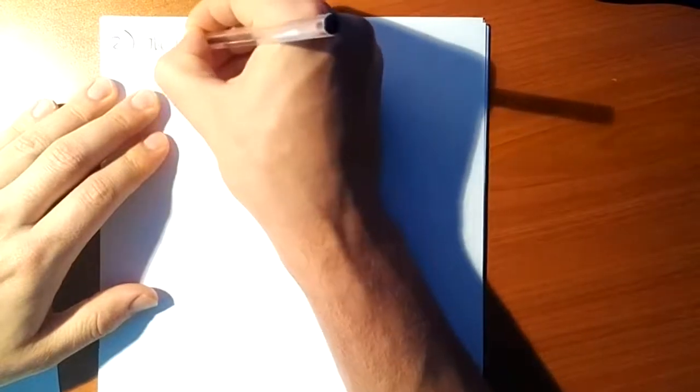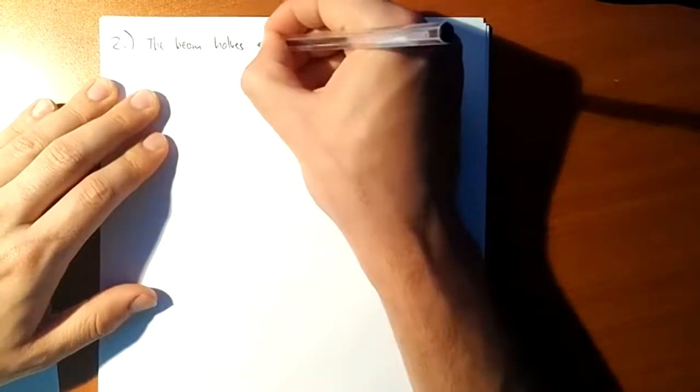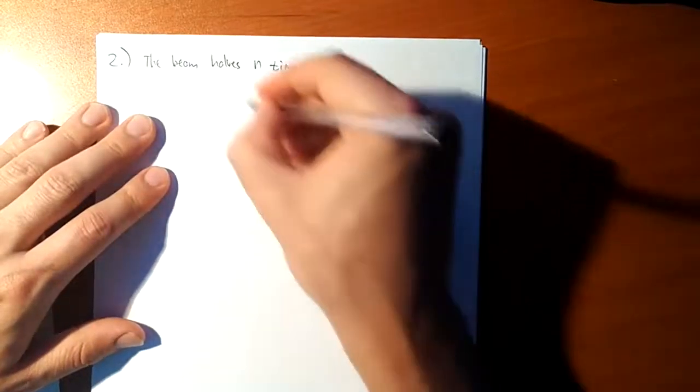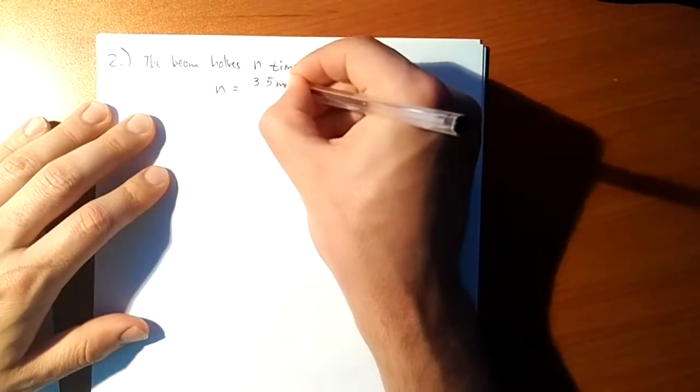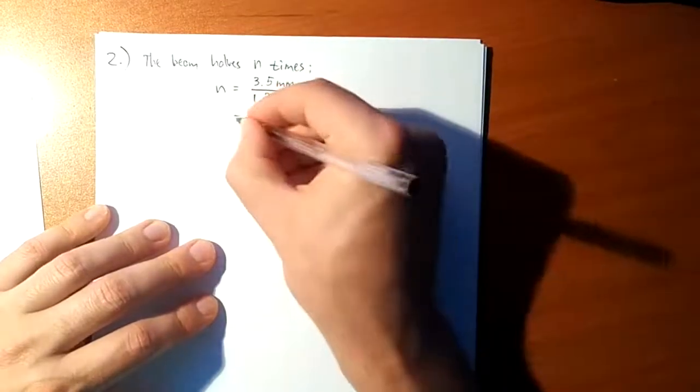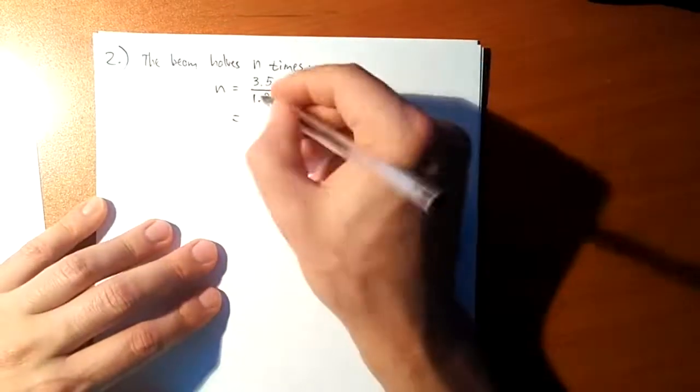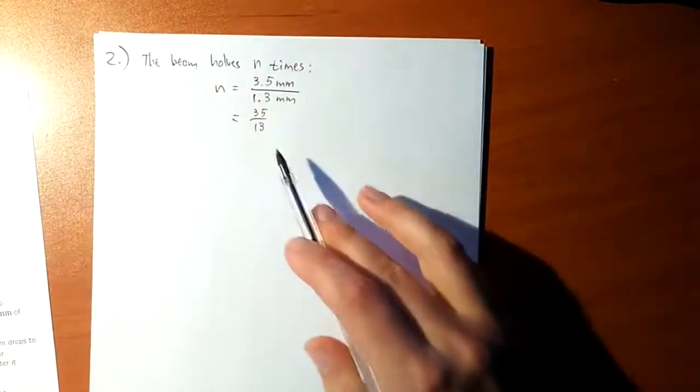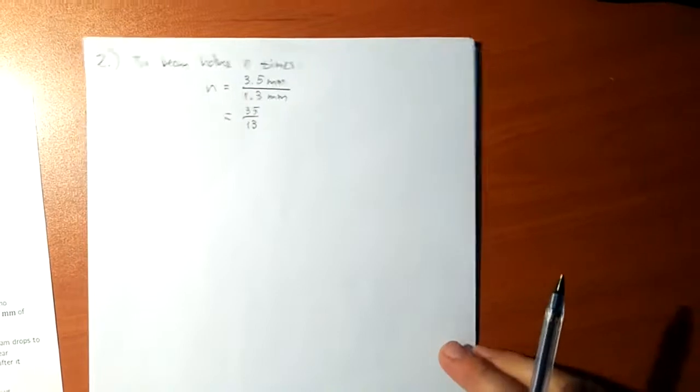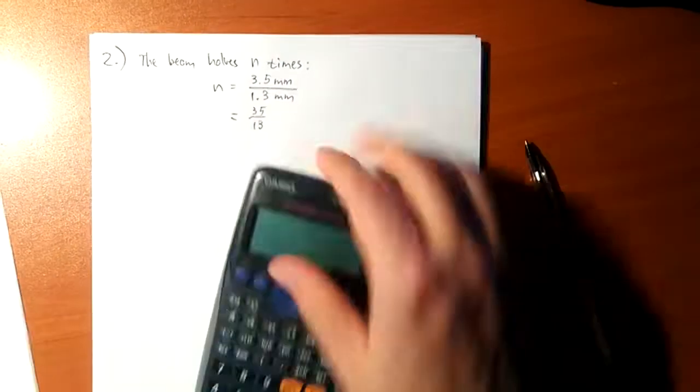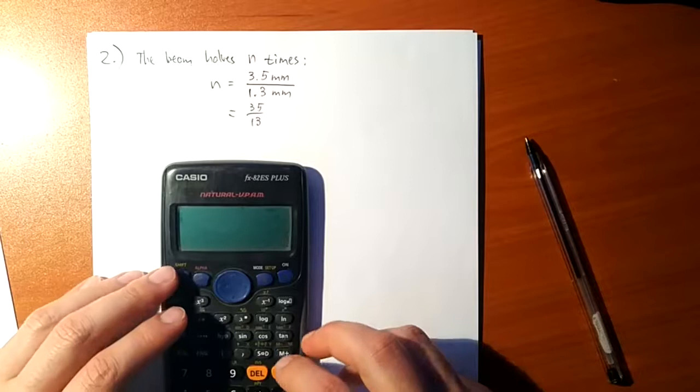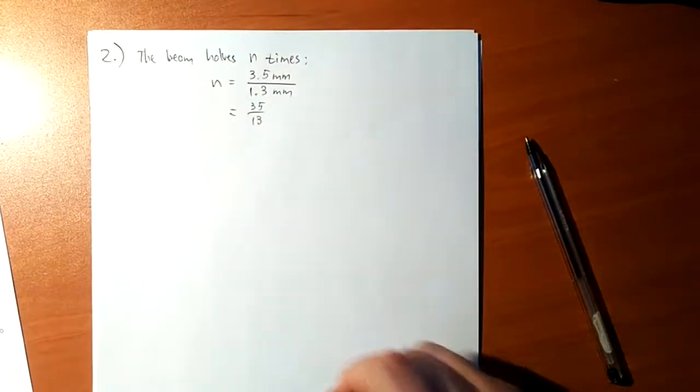So the beam halves N times, where N is now equal to thickness of material, 3.5 mm over 1.3 mm. Now I can calculate this, but I'm just going to leave it as 35 over 13, because why not? I'm not done with this, I'm going to do a calculation still, and this is an easy enough fraction to just carry along in my work. Otherwise I have to decide how many significant figures I want to use. So let's leave it as 35 over 13. Now if you want to calculate, you've got an idea, that's going to be 2 point something. So 35 over 13 is 2.69, so it's approximately 2.7 times that the beam halves. So what is the intensity then?